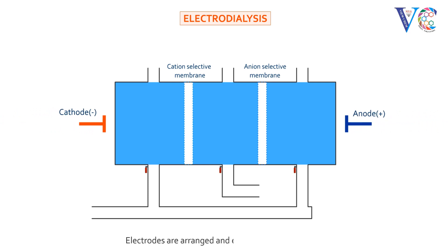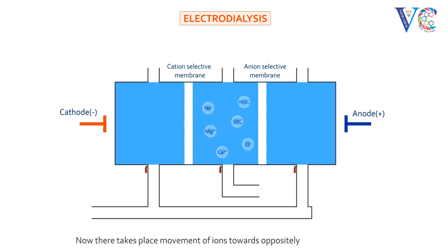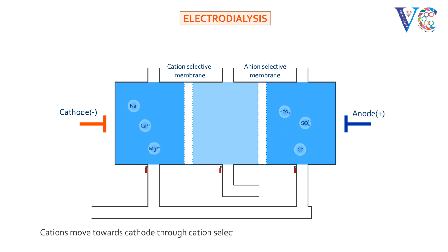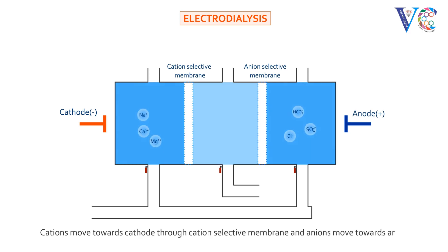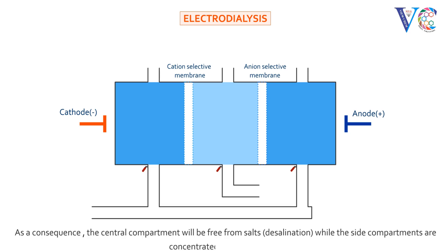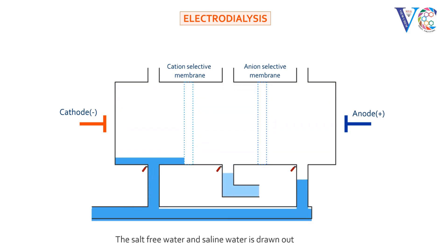Electrodes are arranged and electrolysis is carried out. There takes place movement of ions towards oppositely charged electrodes. Cations move towards the cathode through the cation selective membrane, and anions move towards the anode through the anion selective membrane. As a consequence, the central compartment will be free from salts — that is desalination — while the side compartments are concentrated with salty water. Salt-free water and saline water will be drawn out separately.